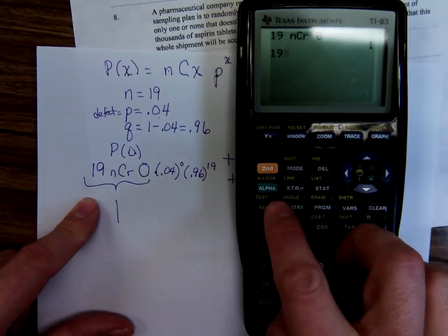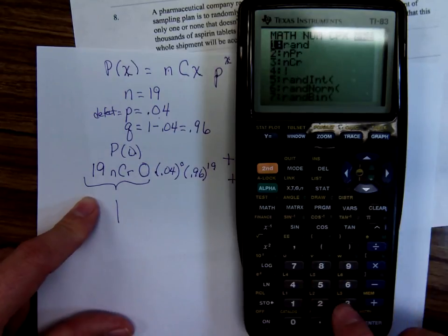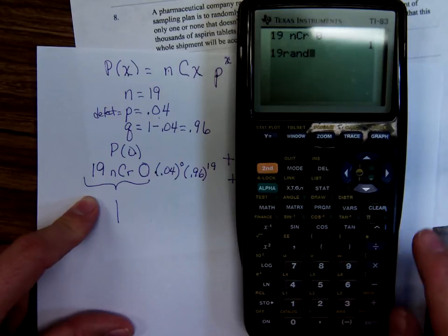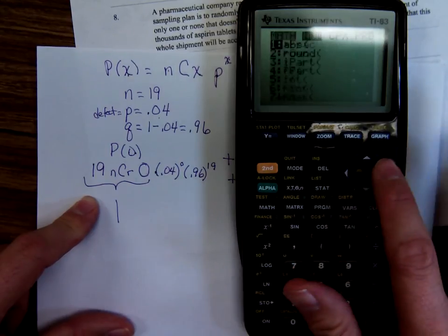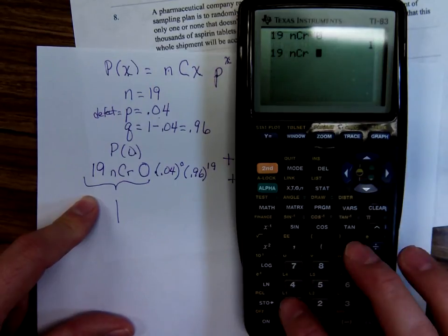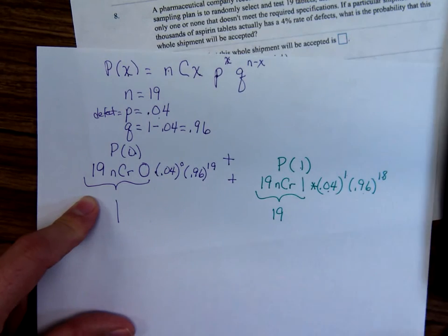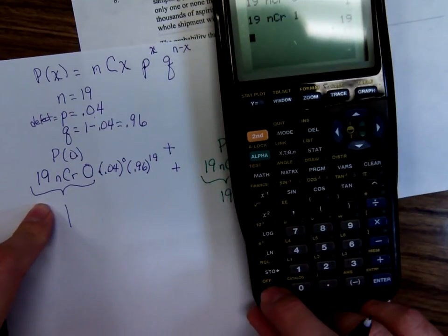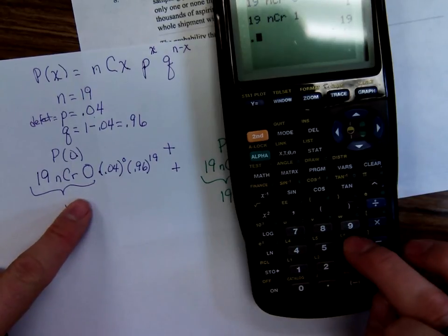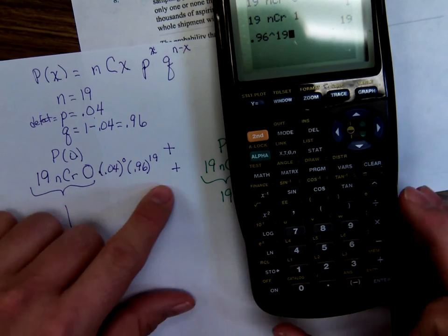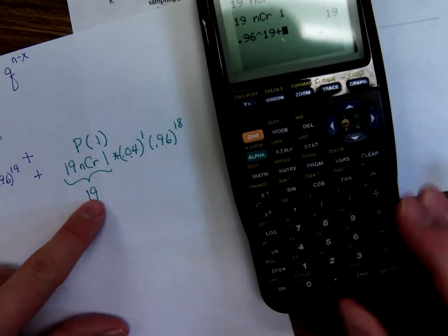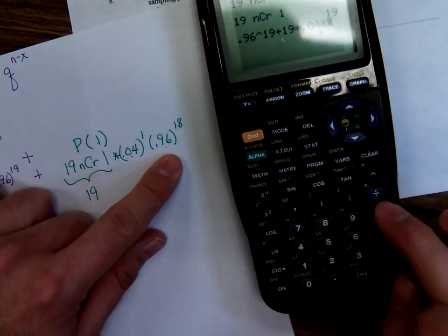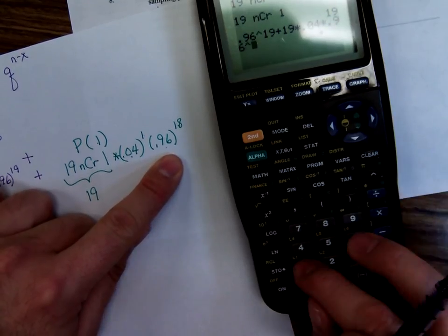This room I'm in has a motion sensor on the lights and cuts it off after a few minutes. I'm not moving enough. See, the 19 NCR 0 is a 1. Let me see if I did the 19 math probability. Clear. 19 math, probability, NCR 1. That's 19. Okay. So, I'll punch in 0.96 raised to the 19th plus 19 times 0.04 to the first is just 0.04 times 0.96 raised to the 18th power.